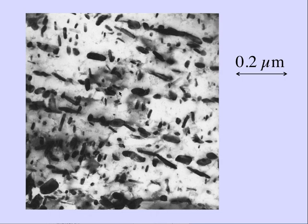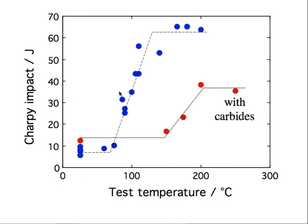These are the typical cementite particles in bainitic steels. We cannot control them because they form at the isothermal transformation temperature. So we do not have the possibility — as we have in tempering of martensite — to control the size of the precipitates by altering the tempering time. We cannot do that with bainite; they form during the transformation.